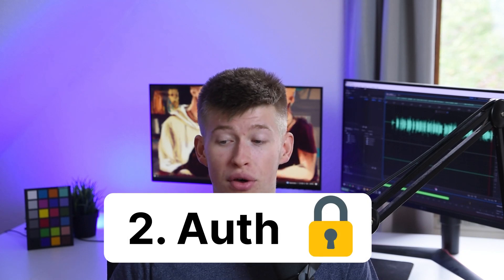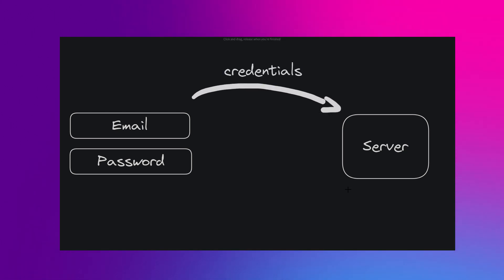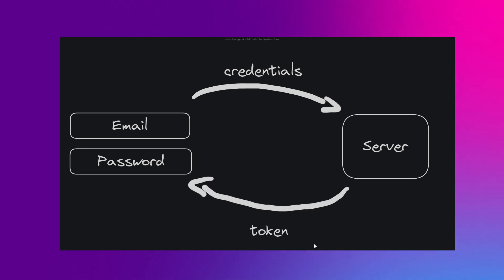Number two is really important: it's authentication and authorization. Those are two different things. Authentication means ensuring the user is who they claim to be, either through OAuth, through Google or GitHub, or through password authentication with email and password. In return for those credentials, the user gets a token — either a JSON web token or a session token that you also store in a database. Those are the two different approaches to authentication.